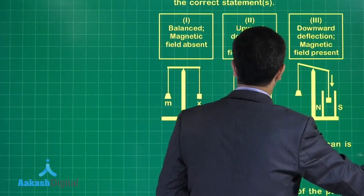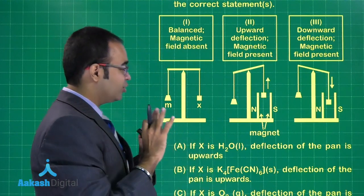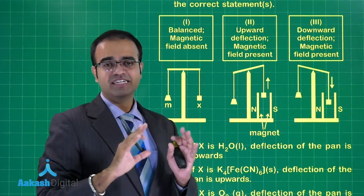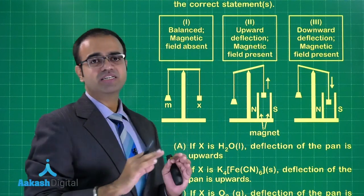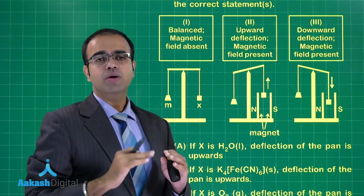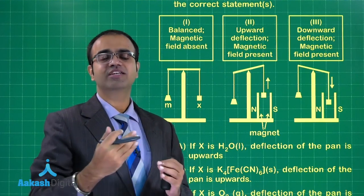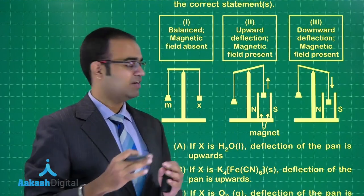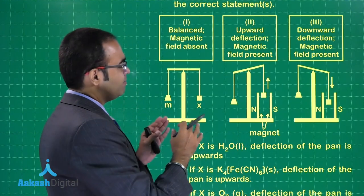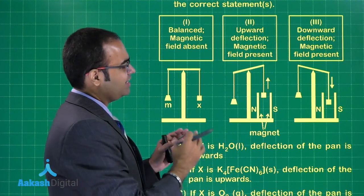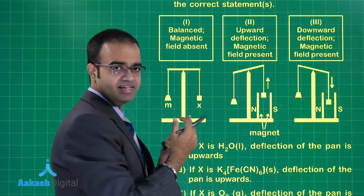Looking at the diagram, don't get deflected by it — it is nothing but a simple question on magnetism, whether the compound is attracted towards the magnetic field or not. We already know that if a compound is paramagnetic then it will be attracted, and if it is diamagnetic then it will be deflected upwards.